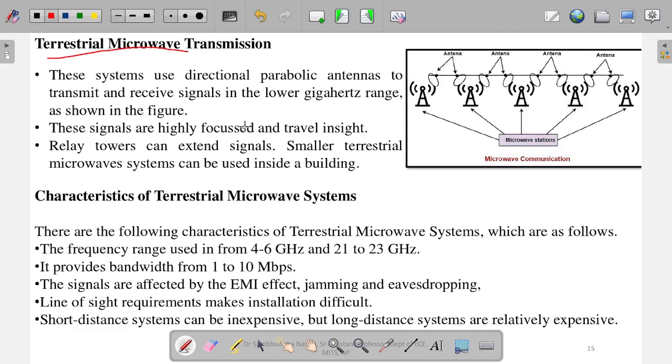First one is terrestrial microwave transmission. From the figure, you can understand what terrestrial microwave communication is. These are some towers with antennas. What happens? These antennas send signals to each other. It does not go to the satellite. The towers send signals to each other, and like this, information from one end reaches the information at the last antenna or any antenna here. When this is happening, this type of propagation or communication is called terrestrial communication.